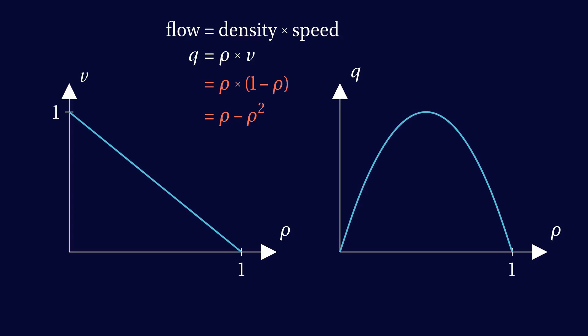To turn these graphs of speed and flow into an equation for how the density evolves, all we need to do is to look at the conservation of the number of cars. Our model should not create or remove cars. From this, we can derive an equation for traffic flow.